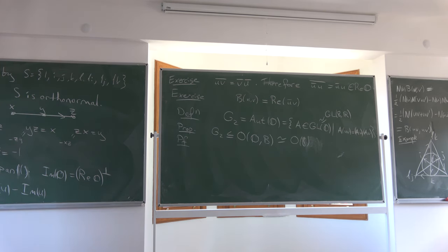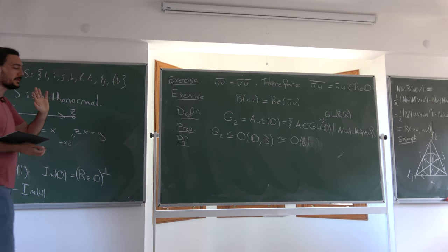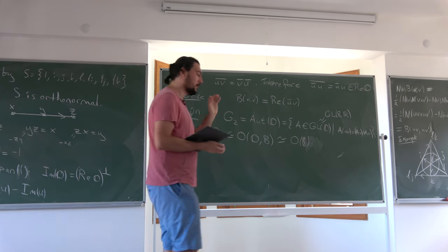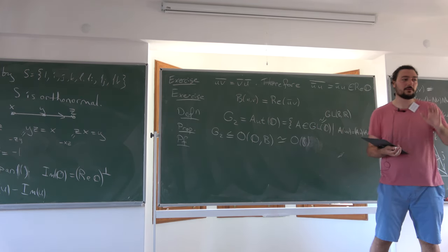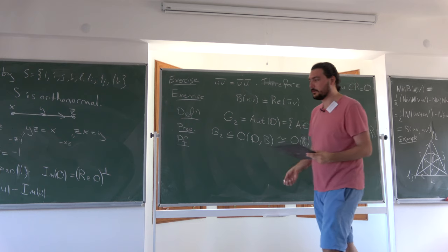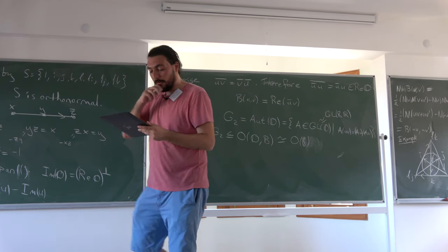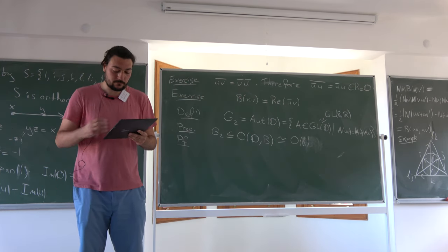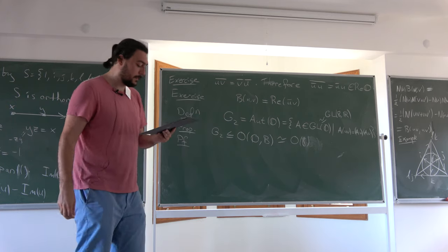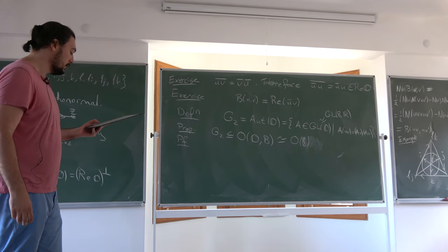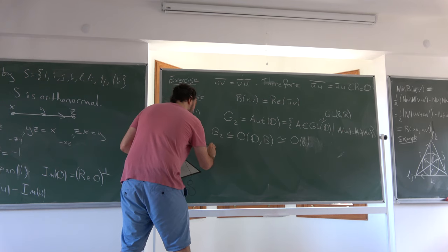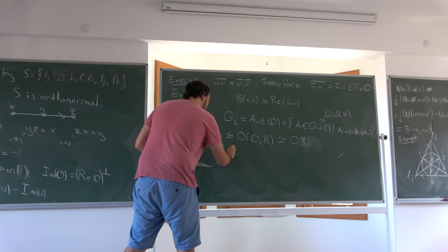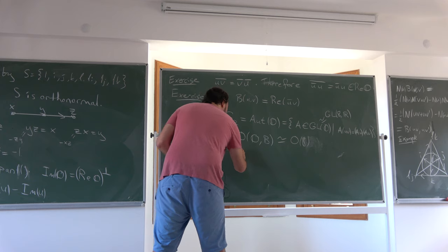Finally, G2 is two-connected: the base space V_{2,7} is four-connected (being an S5 fibration over S6), and the fiber S3 is two-connected. Using the long exact sequence of homotopy groups for the fibration, one can show G2 is also two-connected. Additionally, G2 acts transitively on V_{2,7}: given any orthonormal two-frame (U,V) in seven-space, we can find W to complete a G2 triple, and the corresponding element of G2 sends (I,J) to (U,V).